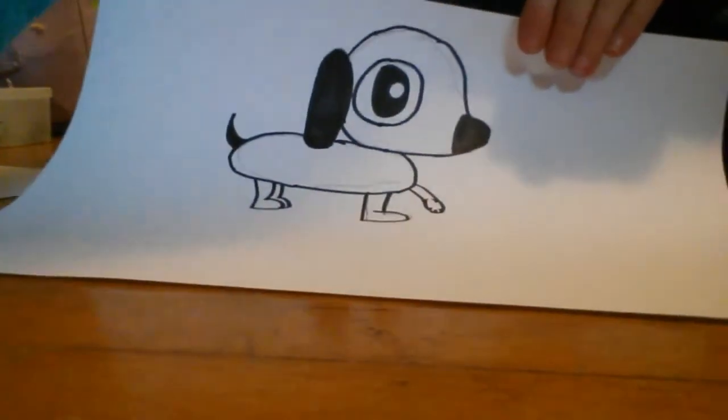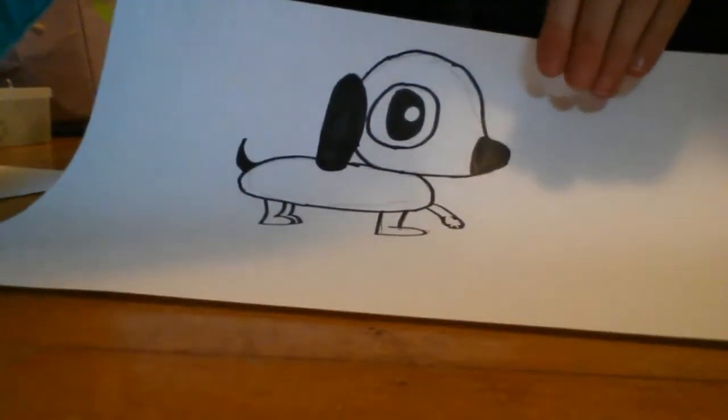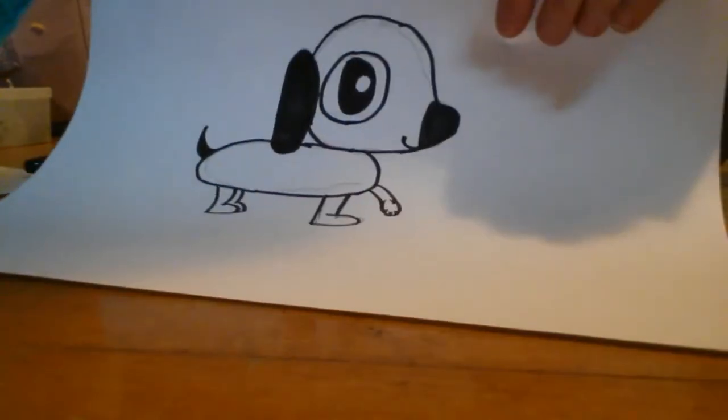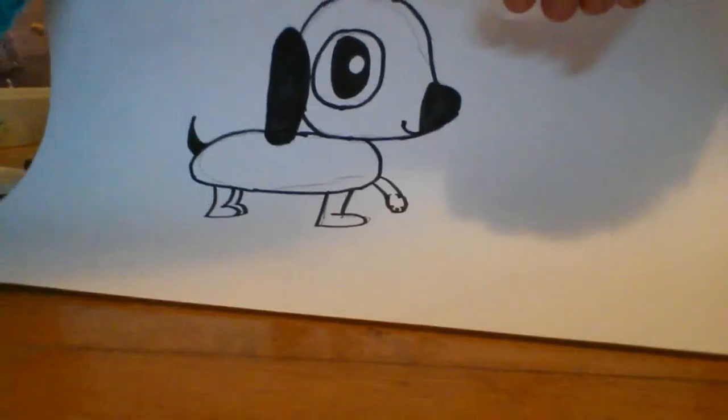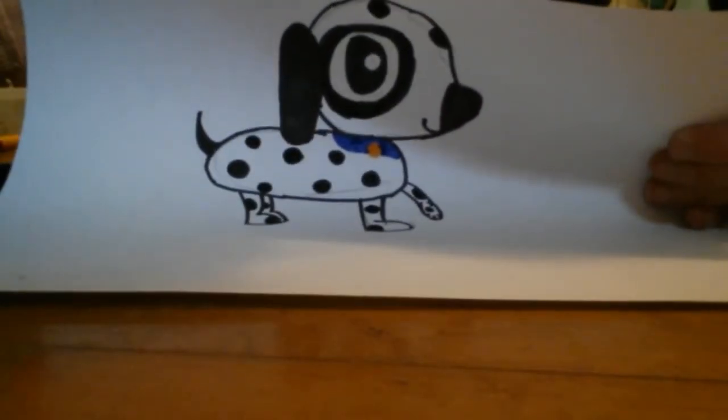Here's your finished dog. You can also add some fun things like a smile like I did. And then of course you can color it however you like. I made this dog a dalmatian.